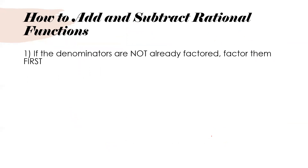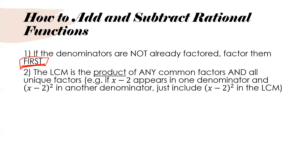To add or subtract rational functions, the first thing you need to do — if the denominators are not already factored — is factor them first. We've noticed throughout that we can't simplify, multiply, or divide rational functions until we have factored. If it's a monomial, you don't have to factor it, but if it's a binomial, trinomial, or anything more, you will likely have to factor it.